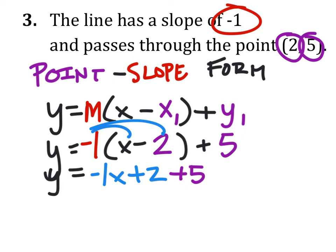So from here, we're just going to combine like terms, which is 2 and 5. And after we get this done, we're going to have already slope-intercept form. You'll see this.